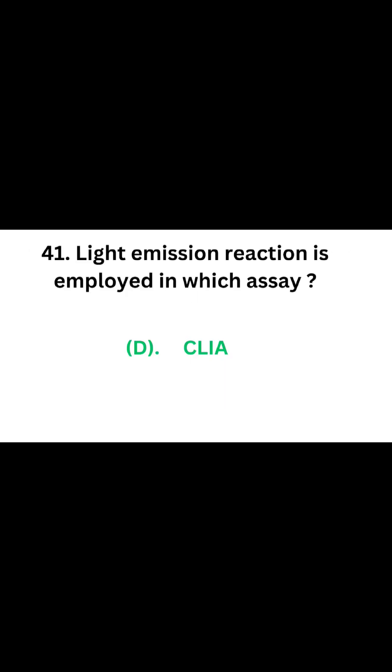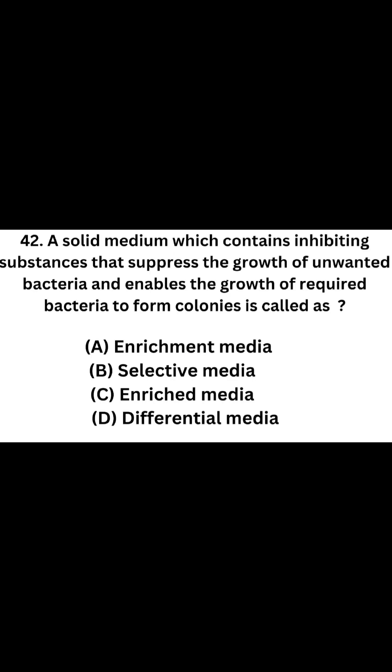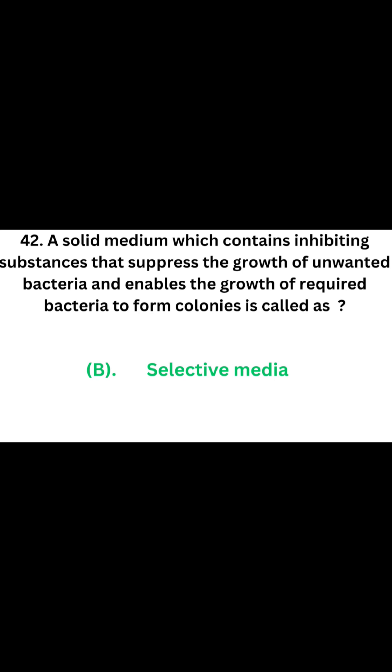It is based on light emission reaction. Question number 42. A solid medium which contains inhibiting substances that suppress the growth of unwanted bacteria and enables the growth of required bacteria to form colonies is called: Option A: Enrichment media. Option B: Selective media. Option C: Enriched media. Option D: Differential media. The correct answer is Option B, Selective media. In selective media, there are inhibiting substances that suppress the growth of unwanted bacteria and enable the growth of required bacteria.